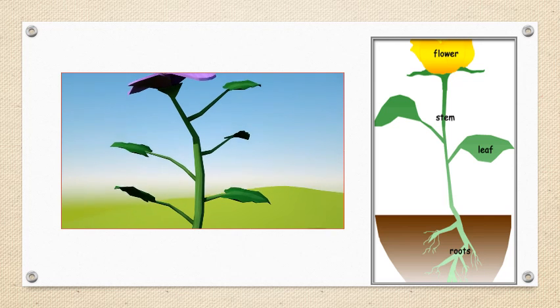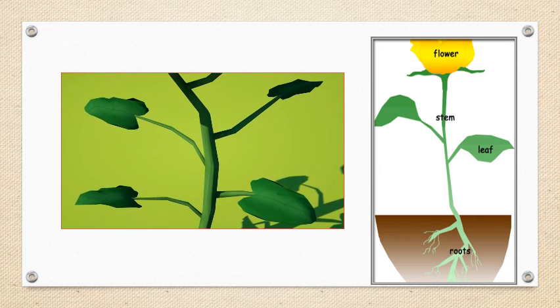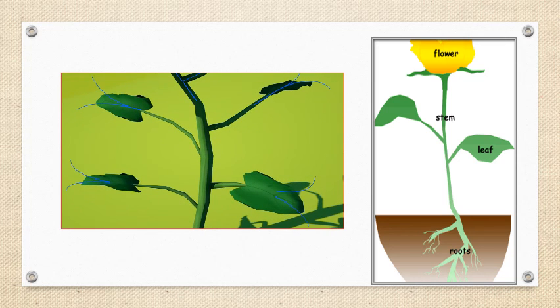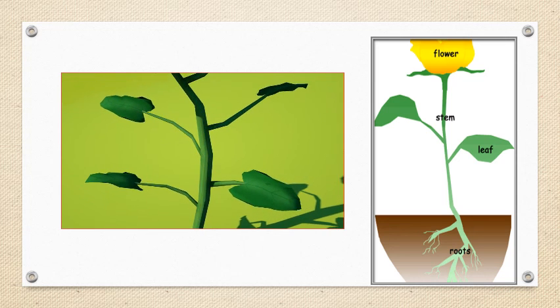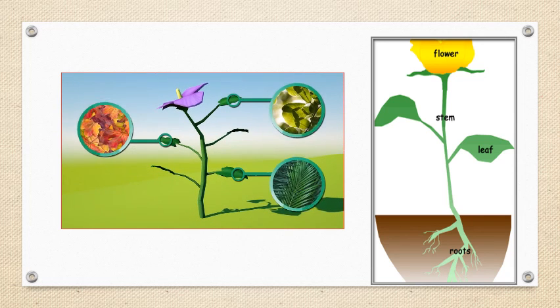The leaves are green because of a pigment called chlorophyll, and they are attached to the stem. Photosynthesis happens in the leaves, which also help the plant breathe. Leaves differ in blade and form.